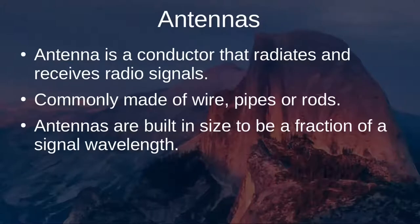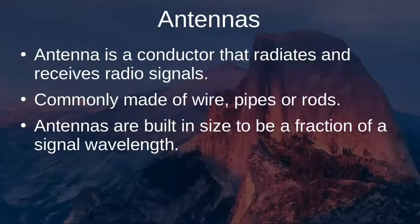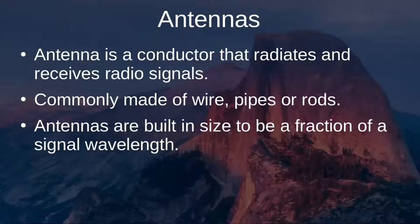An antenna is one of the most critical parts of your radio. Without it, you would not be able to transmit or receive a radio signal. An antenna is a conductor that radiates and receives radio signals, commonly made up of wire, pipes, or rods. Antennas can be built to be a fraction of a signal wavelength — for example, a 160-meter wavelength antenna can be 160 meters long, but handheld VHF/UHF antennas are only about six inches.